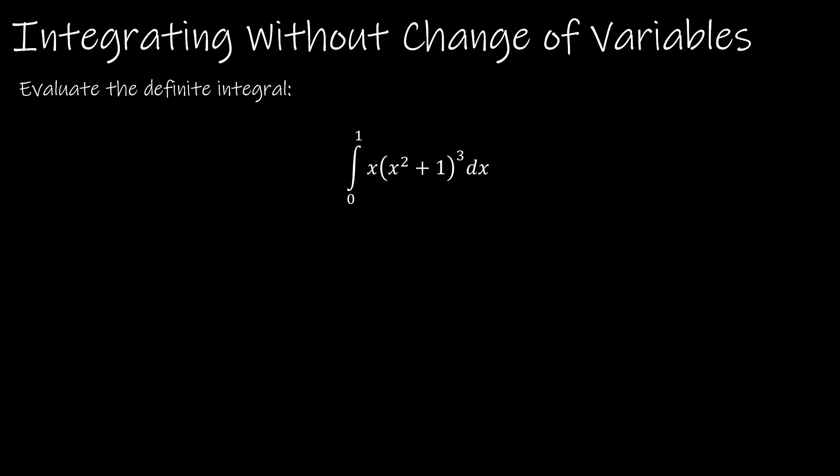So this first time that we do it, it's going to look exactly like what we just did in our last video. We're going to take whatever the composite function is and say that's u. So u is x squared plus 1. The derivative of u is 2x dx.